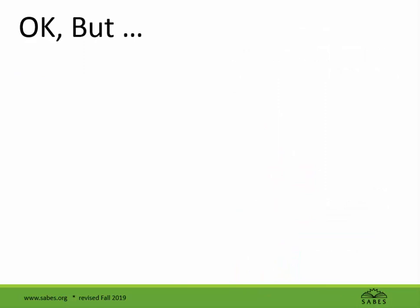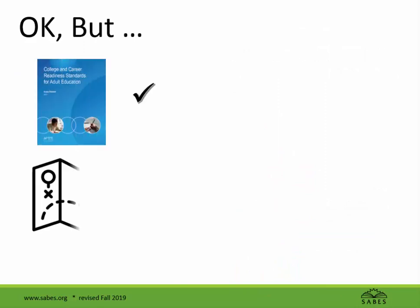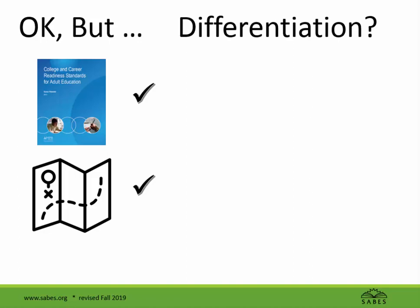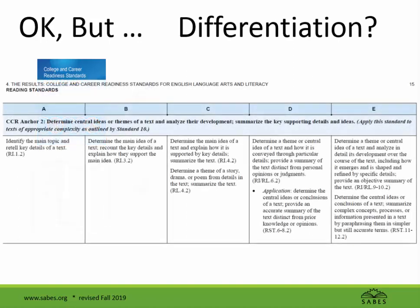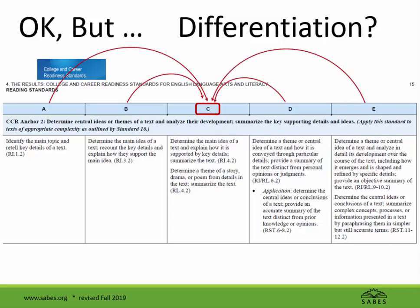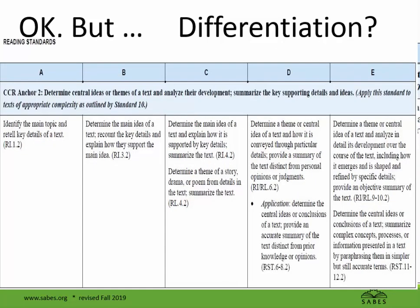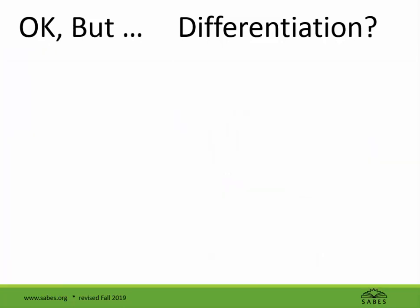So you might be thinking: now I sort of know what these standards are and how to find my way around them, but can they help me with what I need to do right now, like differentiate learning for my real students? Yes, they can. For example, look at Reading Anchor 2 — all about finding main ideas and summarizing. Whatever level you teach, your group most likely includes students who are at other levels as well. So use the details of the standard to help determine what different students should be aiming for. Another way to use the standards to help in differentiation is to look at the small letters that break down some of the anchor standards into specific tasks or skills within a given level.